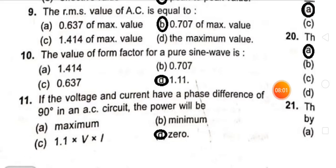If the voltage and current have a phase difference of 90 degrees in an AC circuit, the power will be zero. The answer is zero.